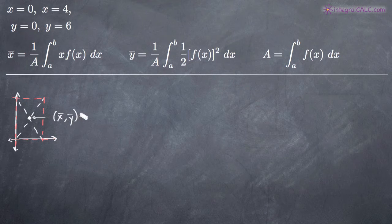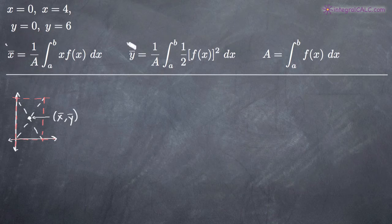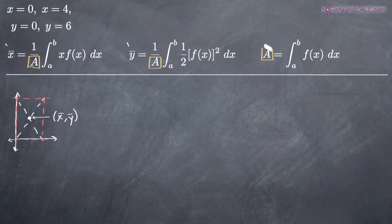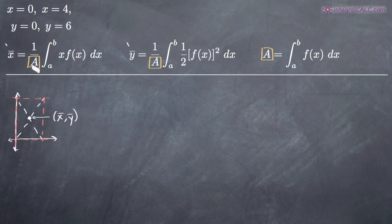So we need to find the coordinates of that point. To find the x-coordinate, we're going to be using this first formula here. To find the y-coordinate, we're going to be using the second formula. Notice that in both formulas we have A, and A is defined by this third formula over here. So the first thing we need to do is find A and then plug it into these equations for the x and y coordinates of the centroid.